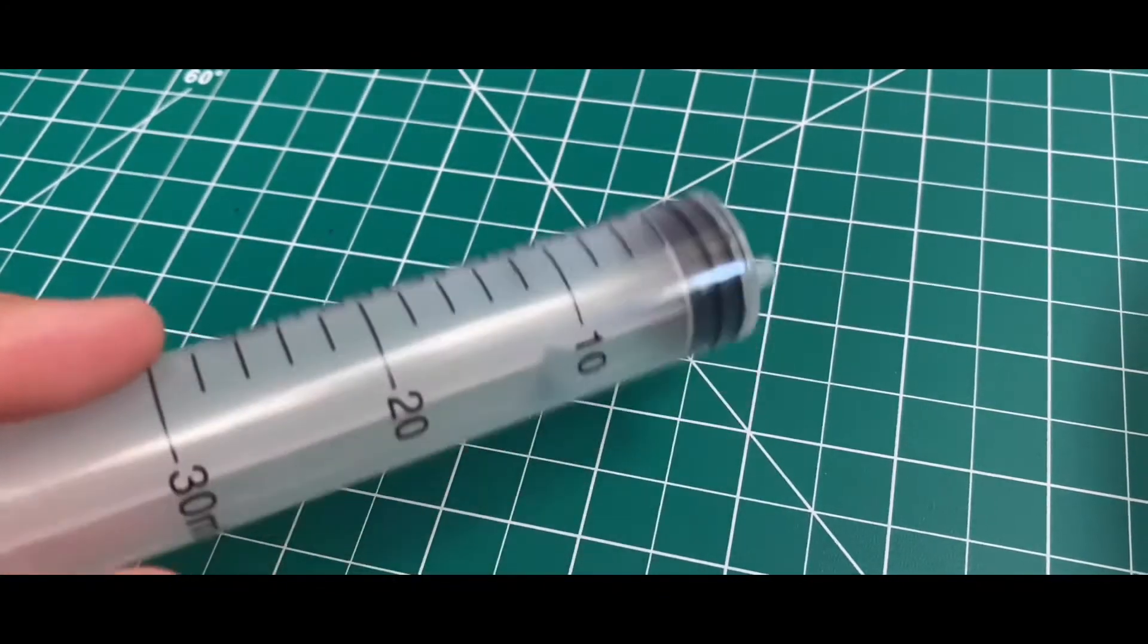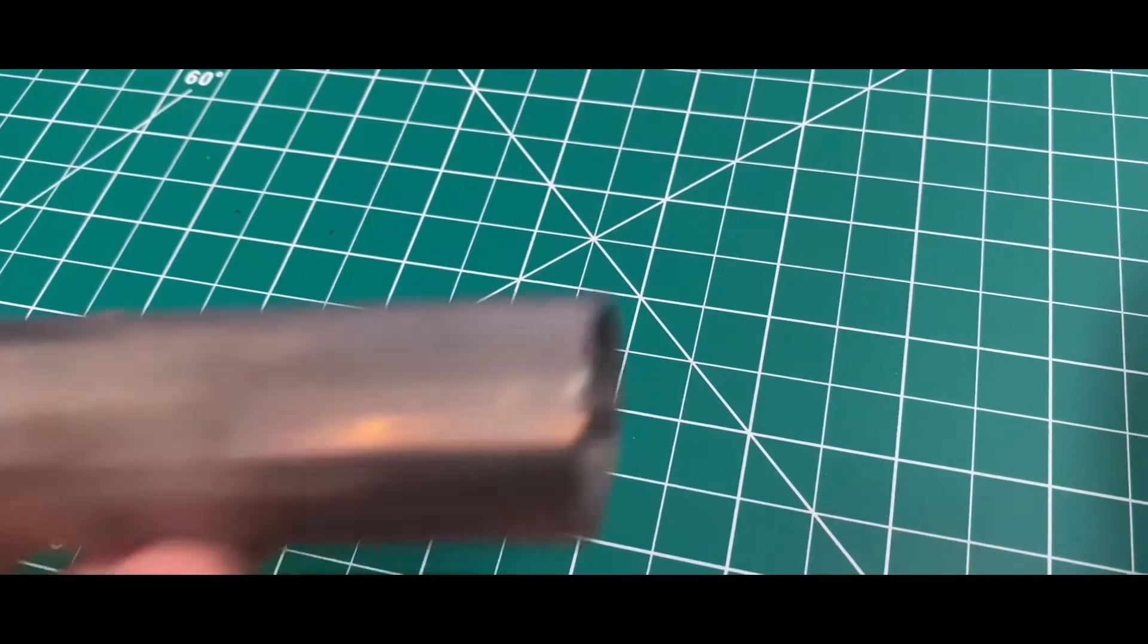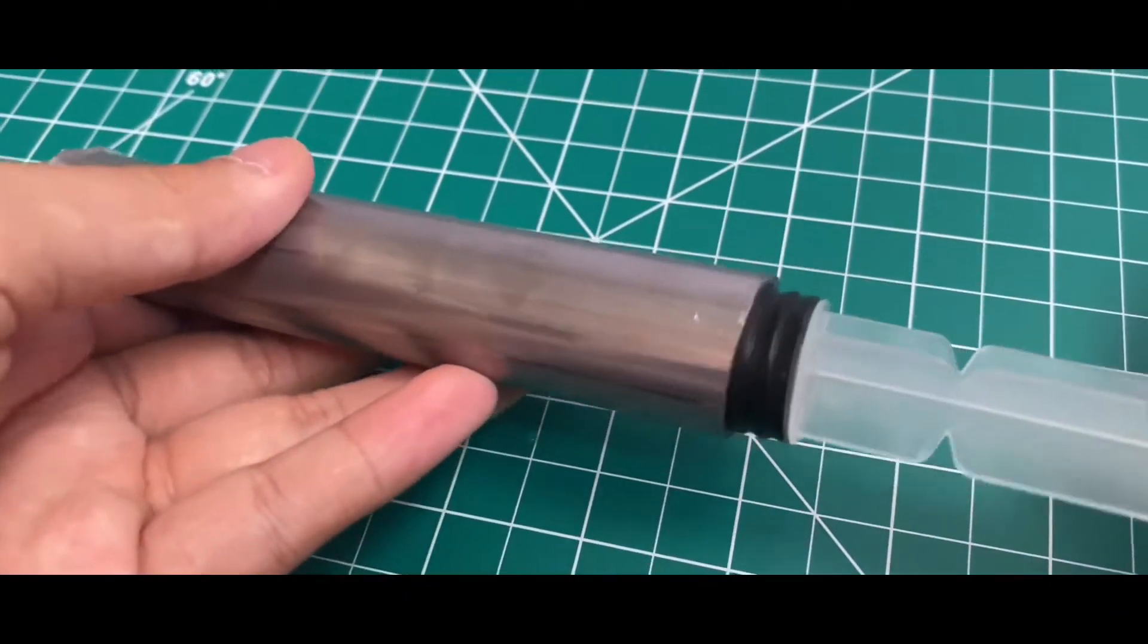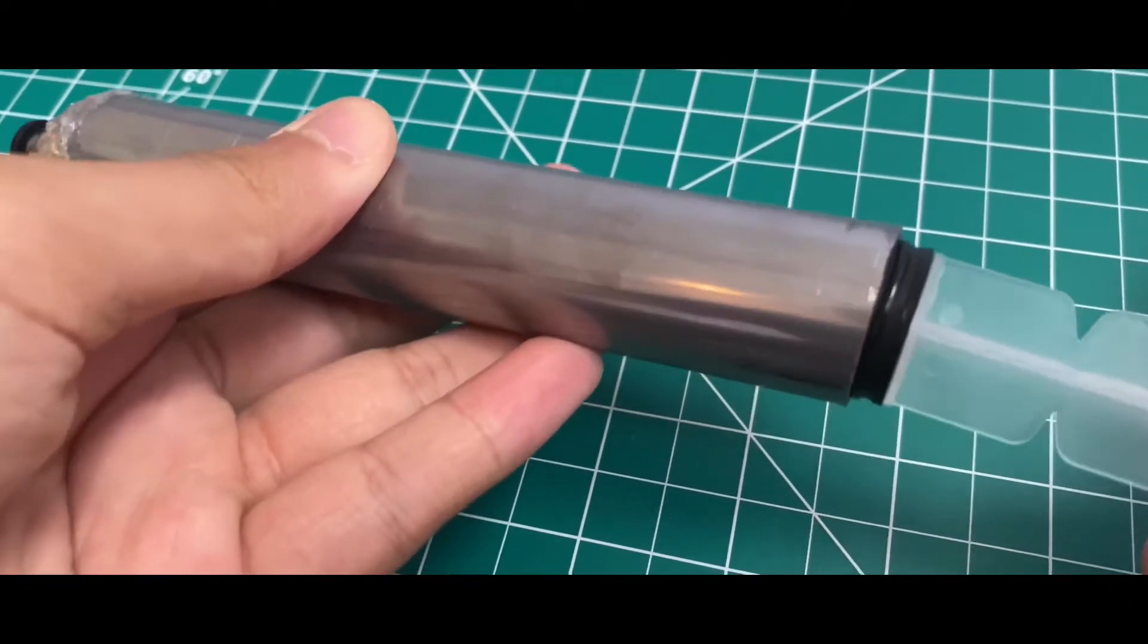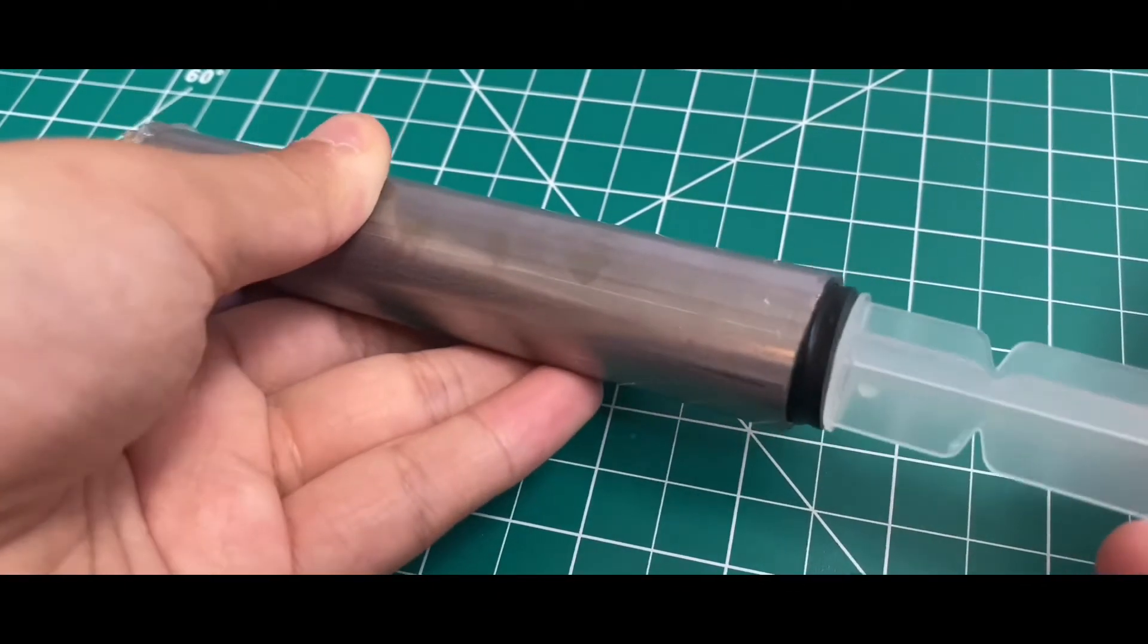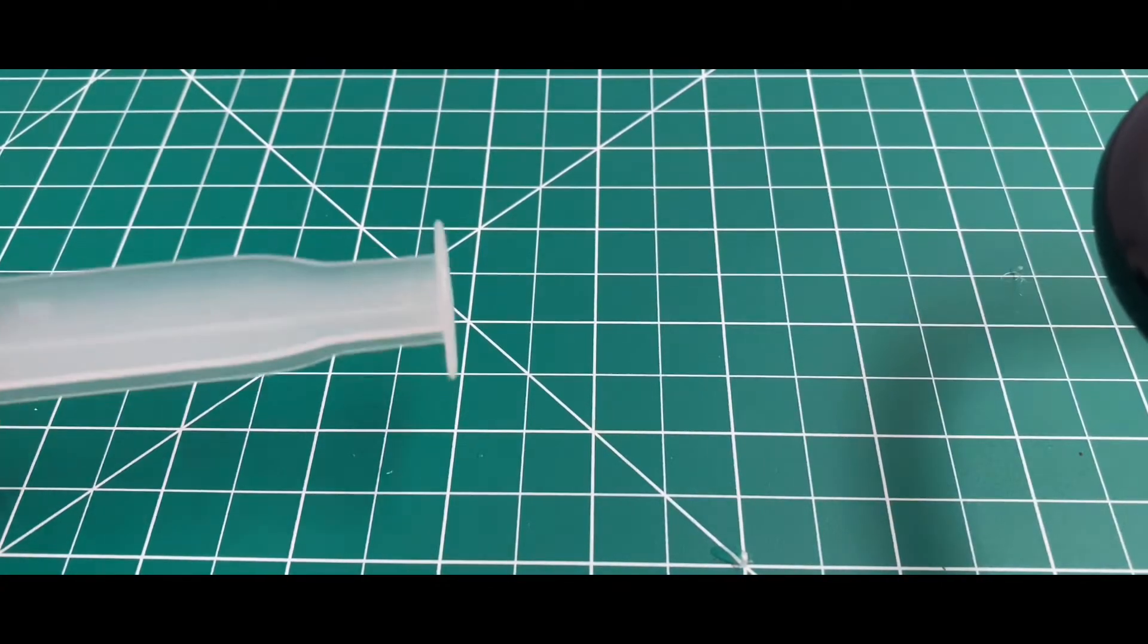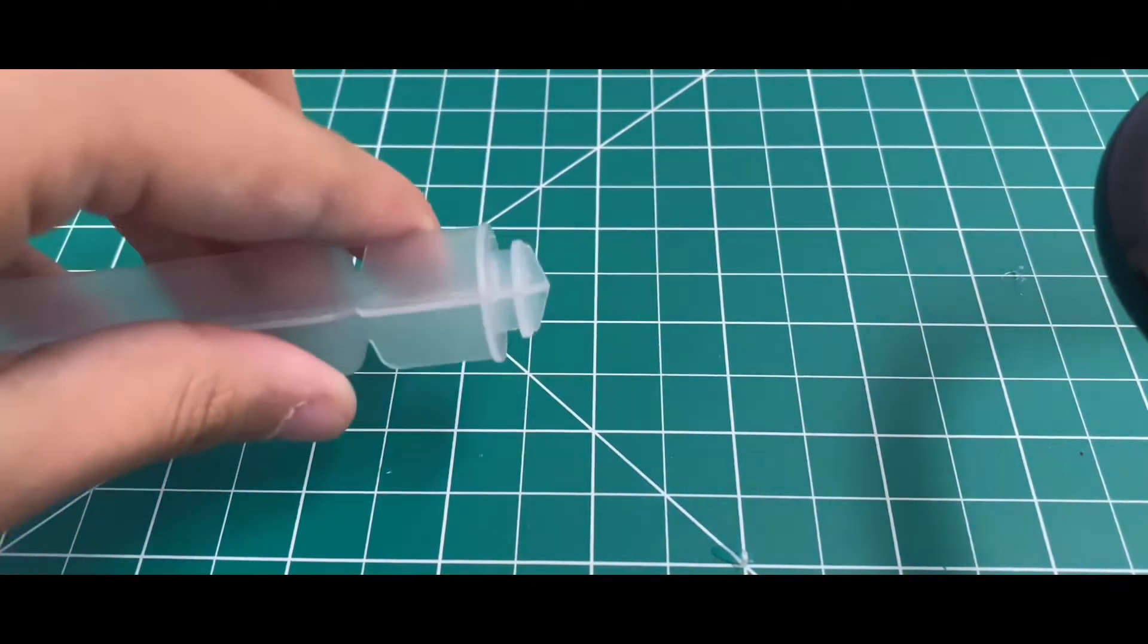Now that you're done with that, this is the most important part so you can't skip this part. You take a 30 milliliter syringe and you're going to take the plunger off but the plunger doesn't fit so you got to cut it a bit. But don't cut it too thin so everything falls out, make sure it's pretty tight so none of the liquid gets out.